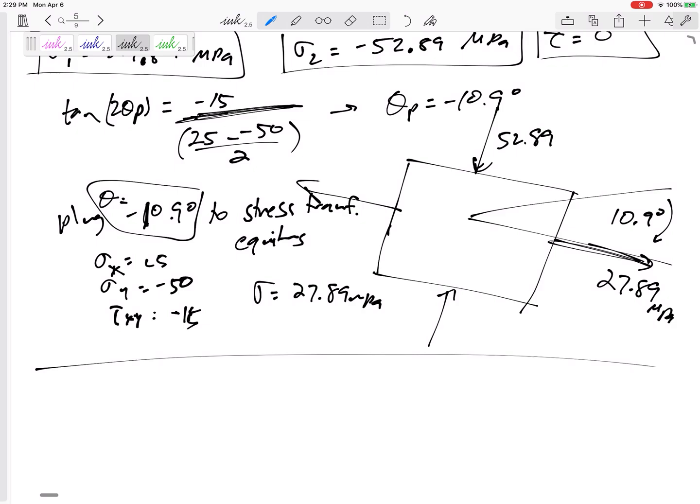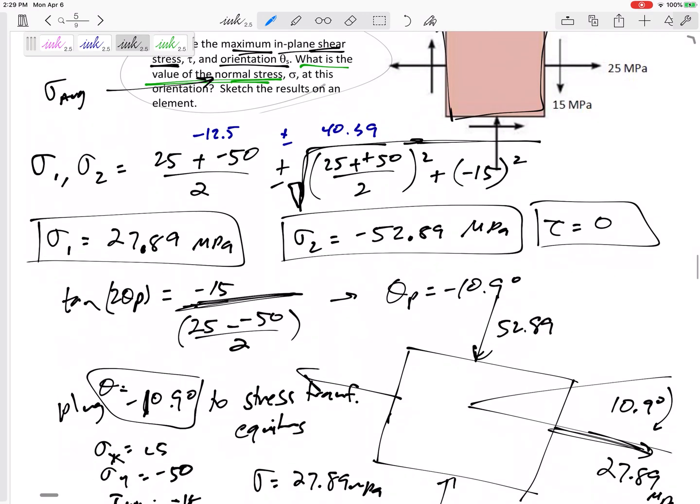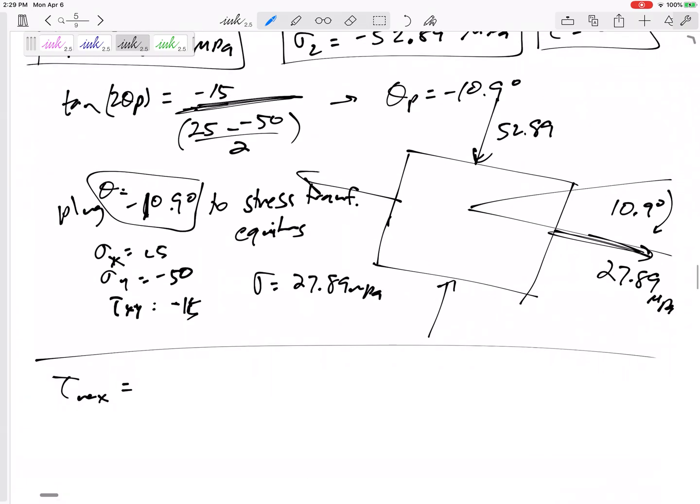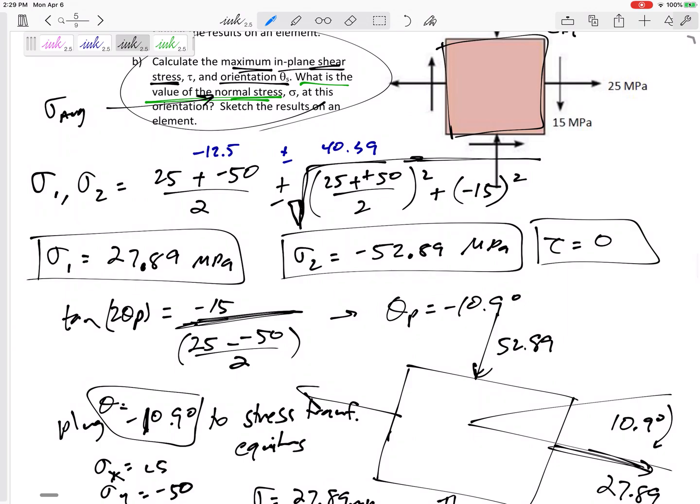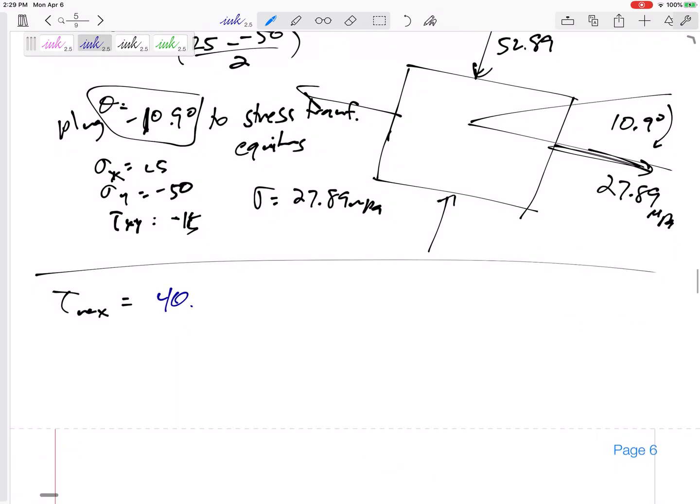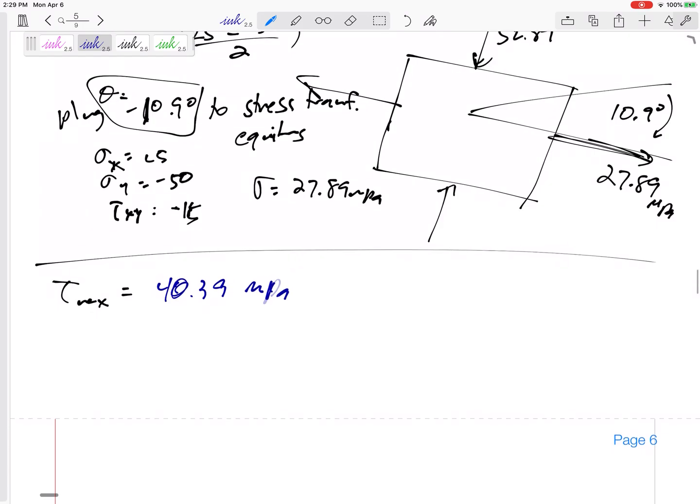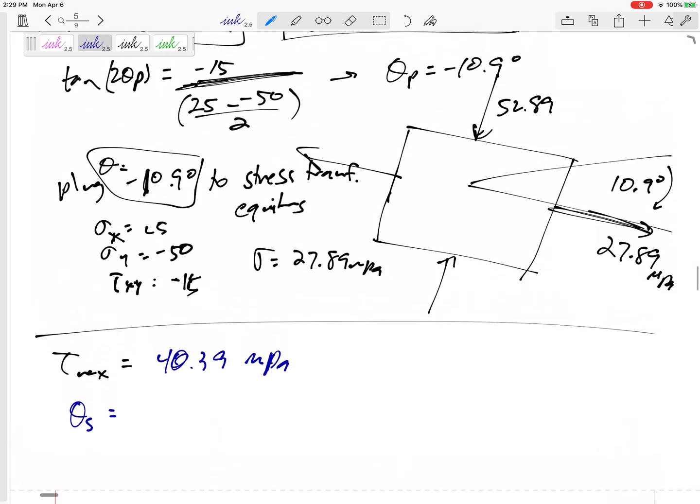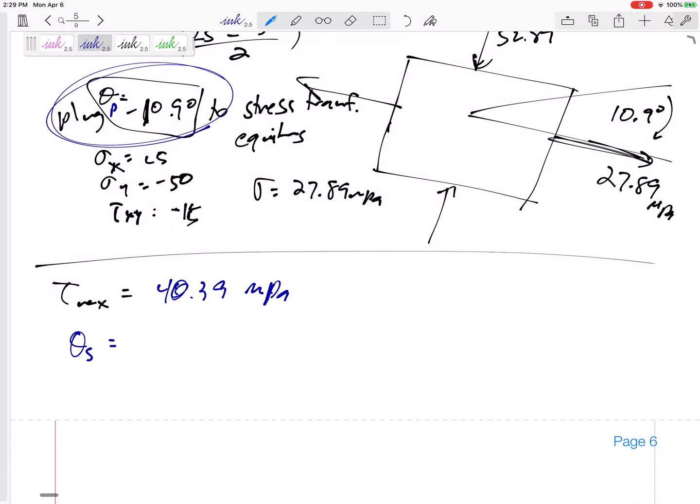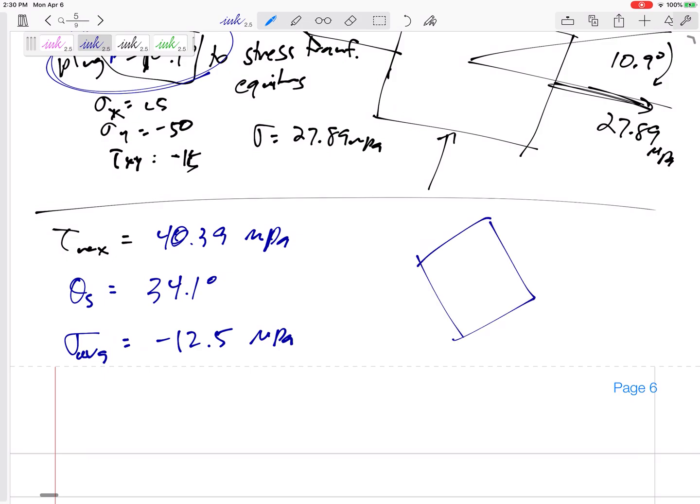Alright, so that was what I was looking for for the first part. Now the second part, maximum shear stress. Maximum shear stress tau max. Now I have an equation. I have an equation on that equation sheet, but it is actually this square root. It is that square root. It is 40.39, 40.39 MPa. Theta s, I could calculate, there's an equation for it, but it's 45 degrees away from theta p. It's 45 degrees away. I can add or subtract 45 from that. I'm going to add, so 34.1 degrees.